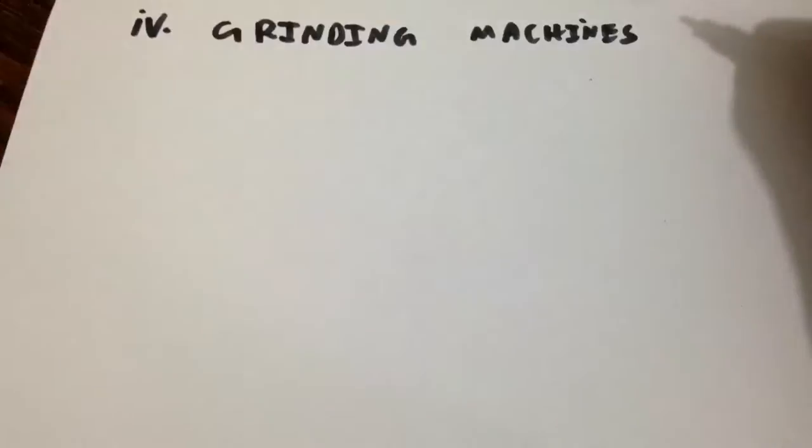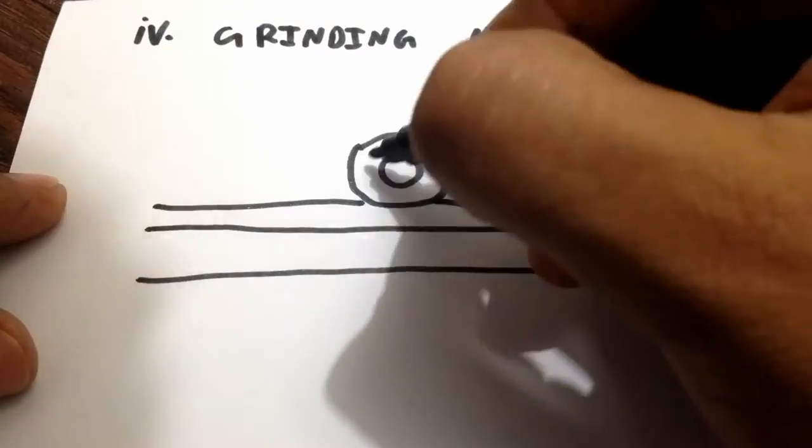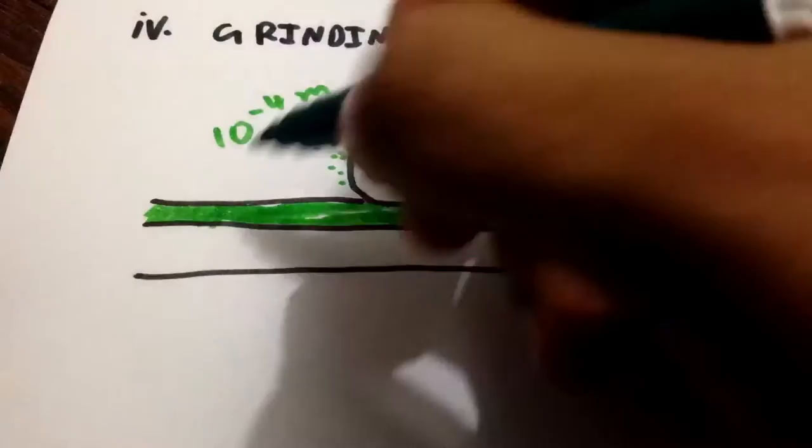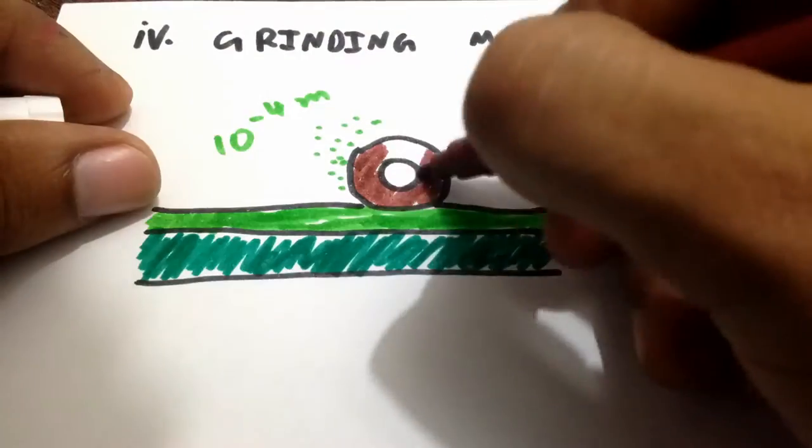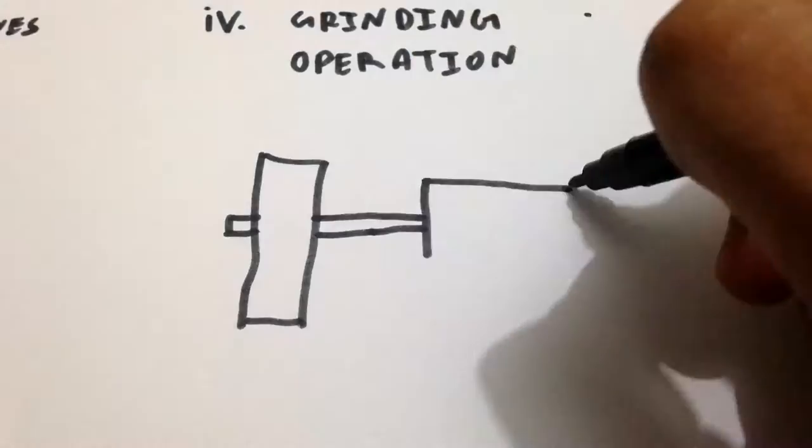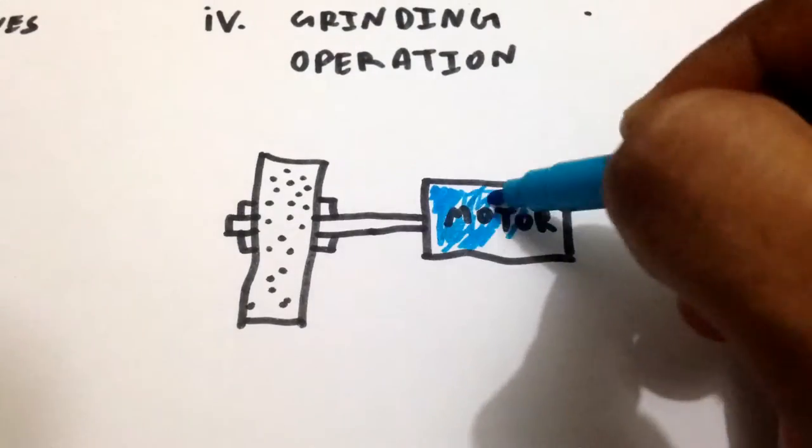Fourth, Grinding Machine. Grinding is the process of removing material by the abrasive action of a revolving wheel on the surface of a workpiece. The removal takes place in the form of small chips. Generally, the grinding wheel is mounted on a spindle driven by an electric motor. Due to the small size of the chips, grinding is considered a finishing operation.